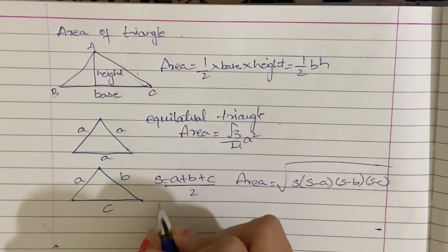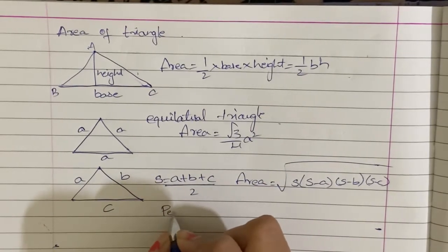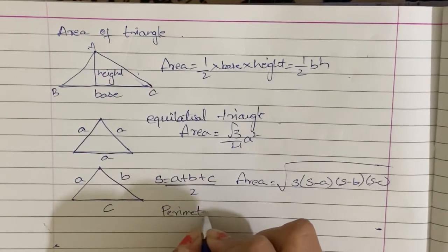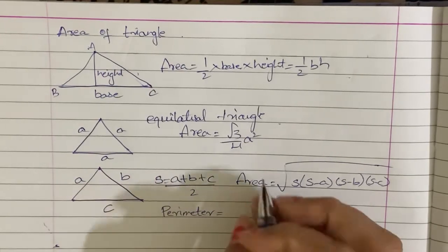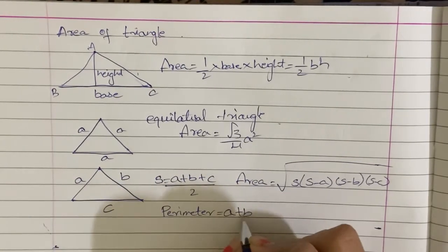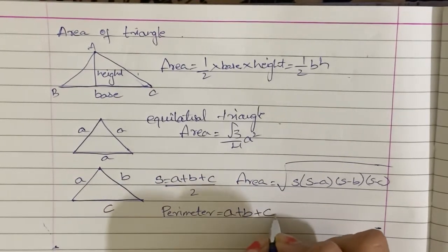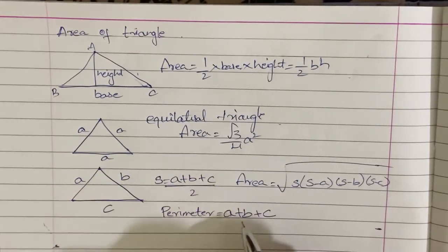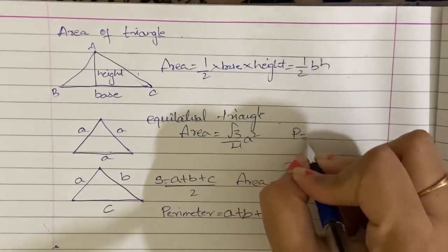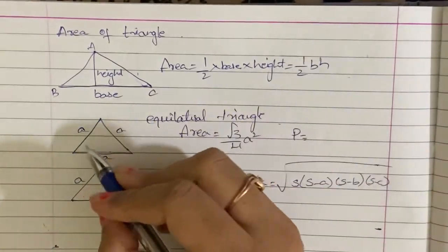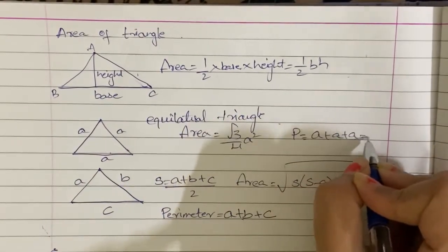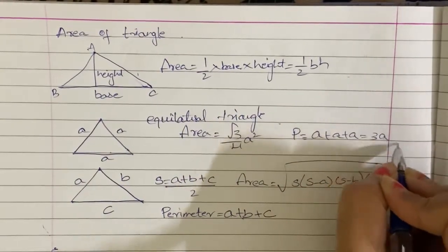The perimeter of a triangle is nothing but the sum of the sides: A plus B plus C. For an equilateral triangle, that is equal to 3A.